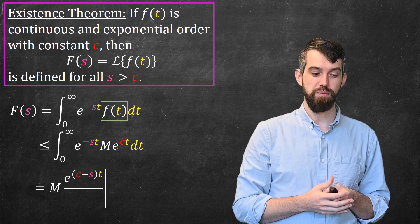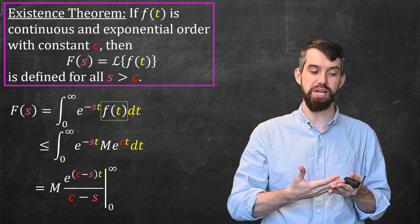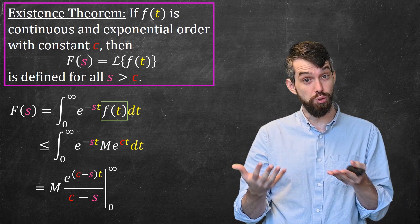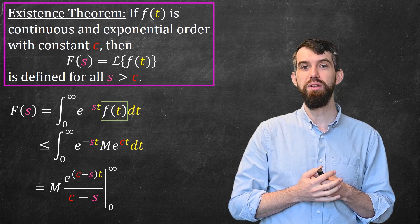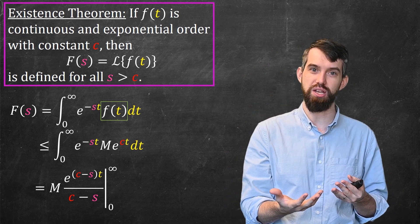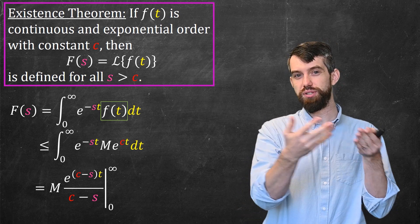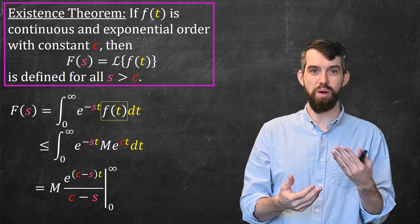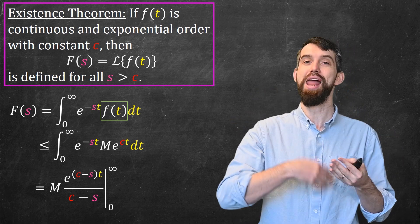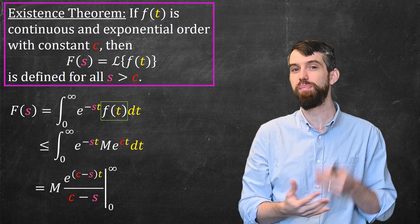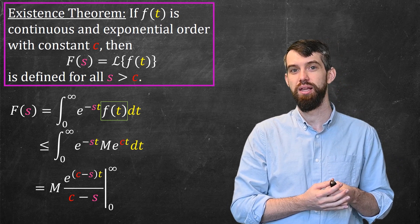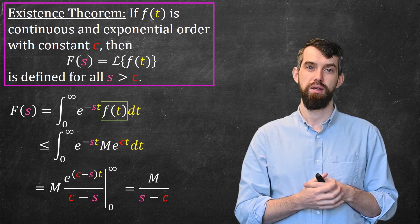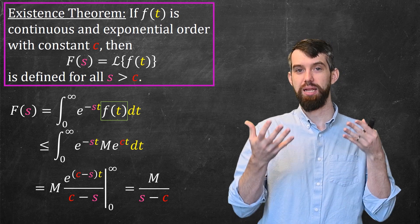Here I can combine the two exponential terms and integrate them. I'm going to get M times e^((c-s)t) divided by (c-s), evaluated between t=0 and t=infinity. When you plug in t equals infinity here, whether this converges or diverges depends on the value of c relative to s. But if you notice what my theorem says, it says that when s is bigger than c, we're going to get existence. Indeed, if I plug that in, when s is bigger than c, it's a negative exponential on top. The t going to infinity goes away and I'm just left with M divided by (s-c). This converges and so indeed our Laplace transform exists.